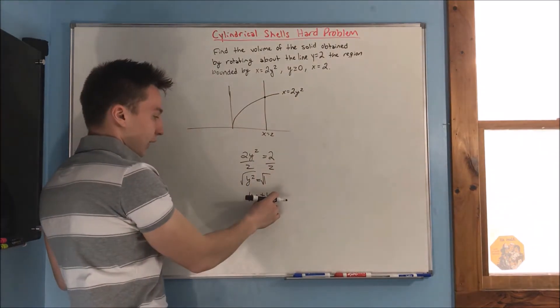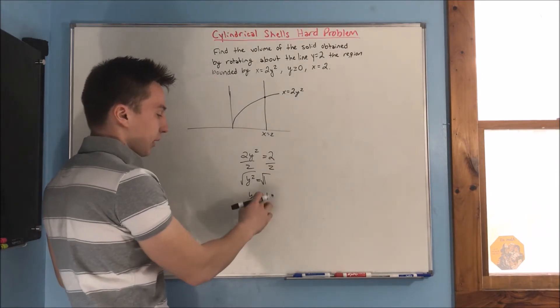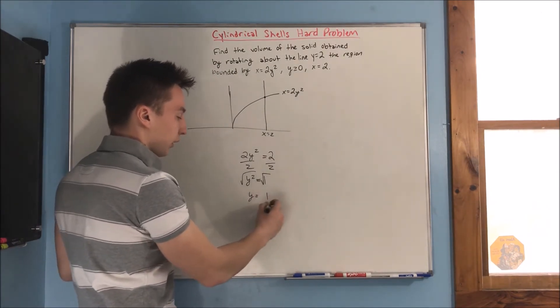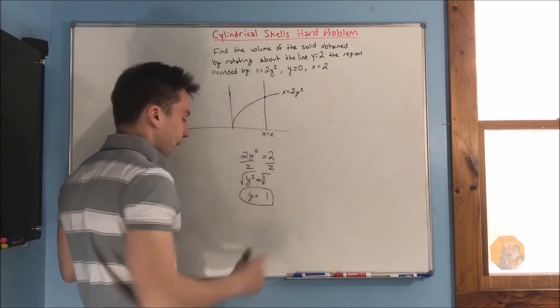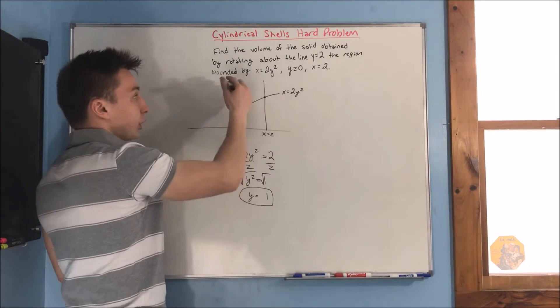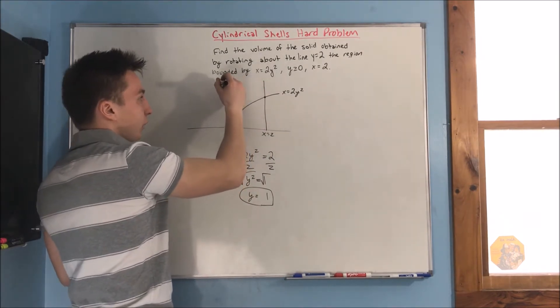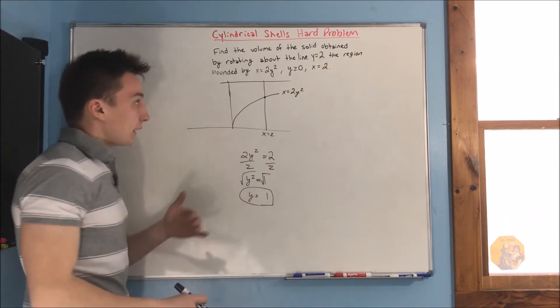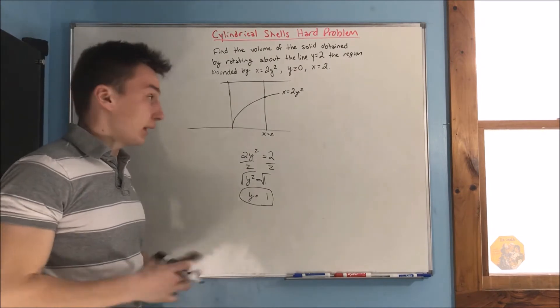Okay? In this case, we're not dealing with the negative case, because y has to be a positive number, because of this inequality here. So, y equals 1. Okay? So, this is happening at y equals 1, so we know that y equals 2 is going to be somewhere up here. Alright? That's our axis of rotation. Okay? And that's good to know.